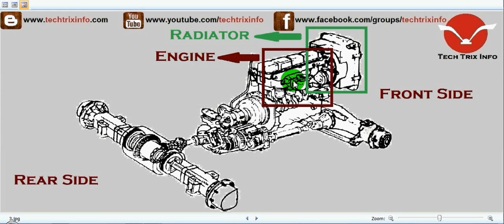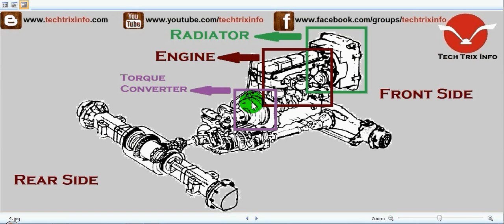This is an automatic transmission vehicle, so after the engine we have the torque converter. The torque converter is a fluid coupling which is employed in automatic transmission vehicles — it is a hydraulic type unit. The torque converter is linked with the flywheel of the engine; it is mounted towards the flywheel.